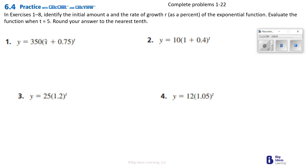Class, we've got problems 1 through 22 — let's knock it out. In exercises 1 through 8, identify the initial amount A and the rate of growth as a percent. So identify the initial amount A and the rate of growth R in the exponential function, and evaluate when T is 5.